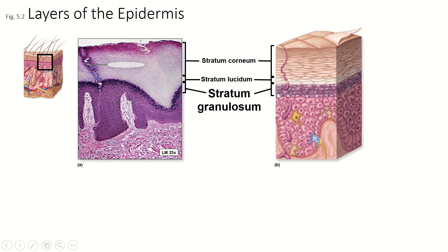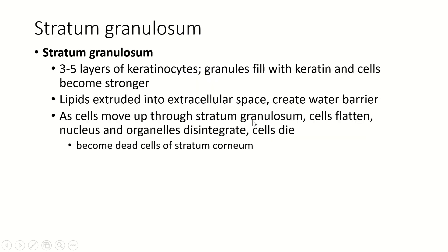Next up is a thinner layer called the stratum granulosum. These cells are full of granules, and those granules are keratin. So these are still keratinocytes, and they are working on making lots and lots of keratin and building up that keratin inside their cytoplasm. They also make lipids — lipids are made by smooth endoplasmic reticulum, so these cells have lots of smooth endoplasmic reticulum. Then they secrete those lipids into the extracellular space to create a barrier for water getting through.